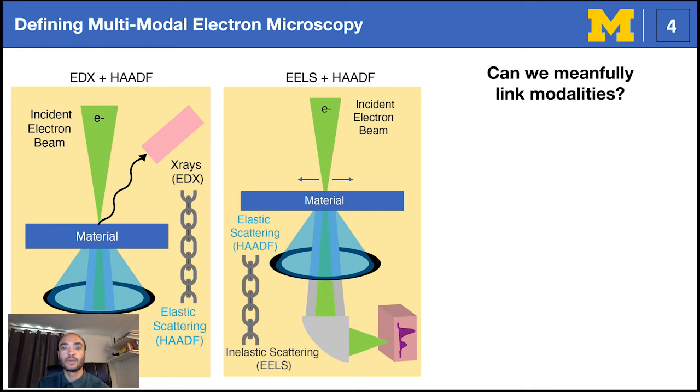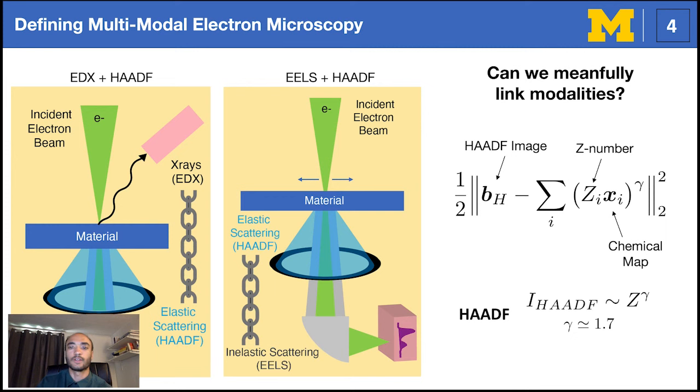Ultimately, we can formulate this objective as an inverse problem that seeks to decouple the chemistry embedded inside the HAADF through a simple and coherent imaging model. Here, we assume the HAADF modality is proportional to the sum of elements brought to the power of gamma. This term fuses the available modalities, thus allowing all the signals to interact and communicate with each other.